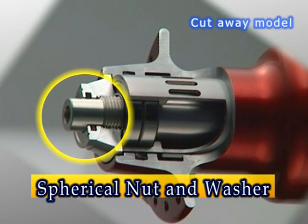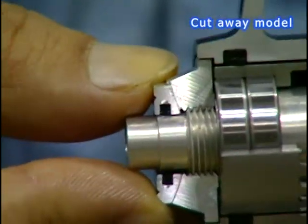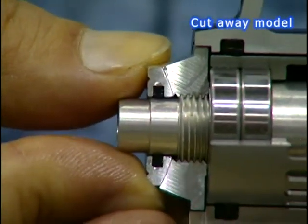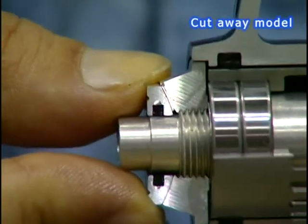Another sophisticated feature of the Gokiso hub which contributes to its superior performance is a spherical nut and washer. This structure adjusts the angle of the shaft while it is installed to a frame.